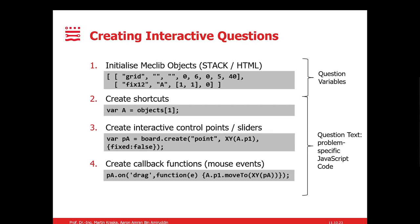Then here we initialize the MecLib objects. At the code section, we create shortcuts by assigning the objects and their array positions into new variables. From this, we then create the interactive control points or sliders, depending on our needs. And finally, if we want the specific objects to be interactive, we then create the callback functions or mouse events. Then we specify how the behavior of the mouse would be like when the users click on it.